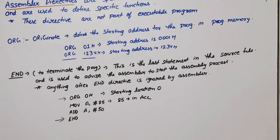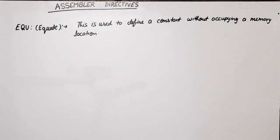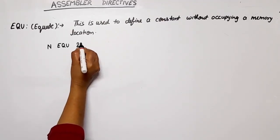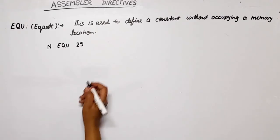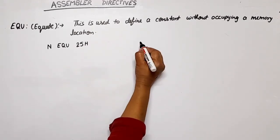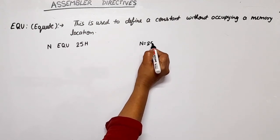The third assembler directive is EQU, which means Equate. This is used to define a constant without occupying a memory location. For example, if I have written VALUE EQU 25, it means VALUE is equal to 25H.